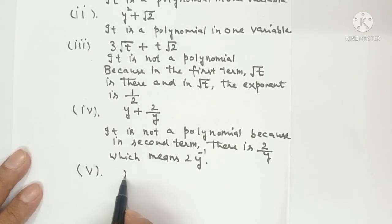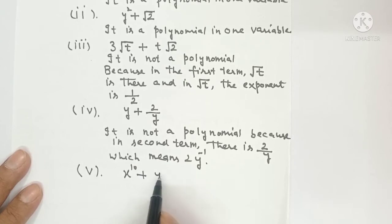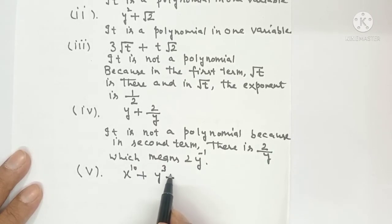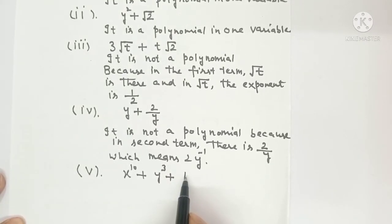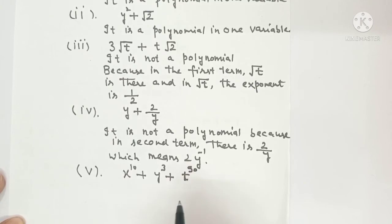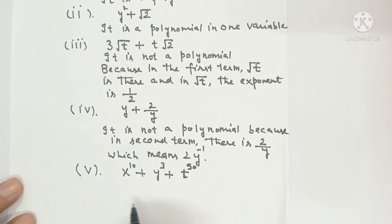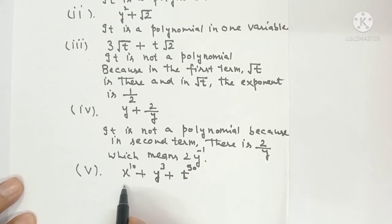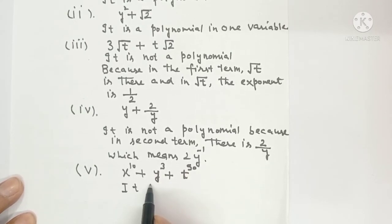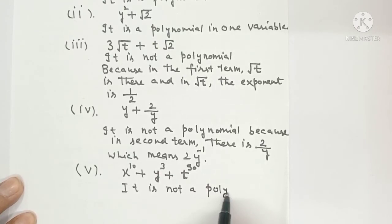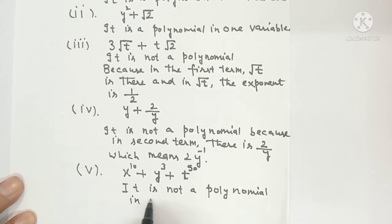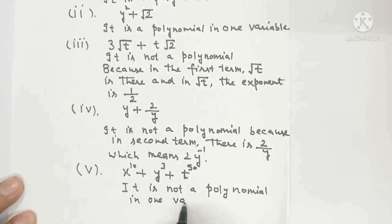Part number 5. x power 10 plus y power 3 plus t power 50. This polynomial condition ko satisfy kar raha but it is not one variable because it has x, y, and t. It is not a polynomial in one variable because there are multiple variables.